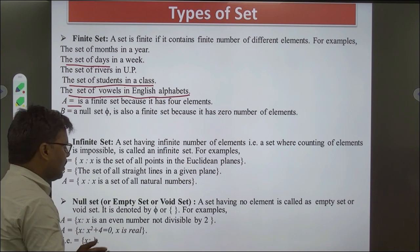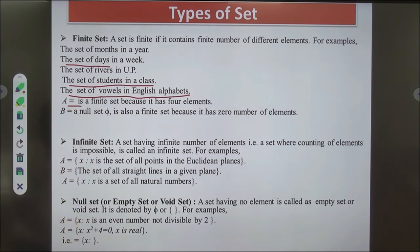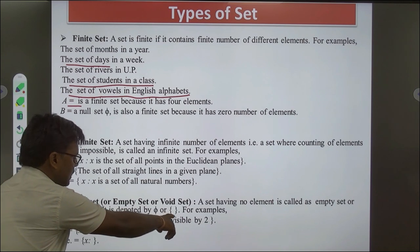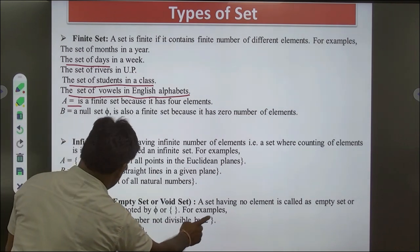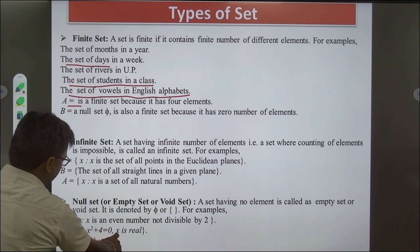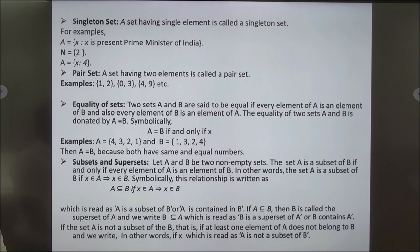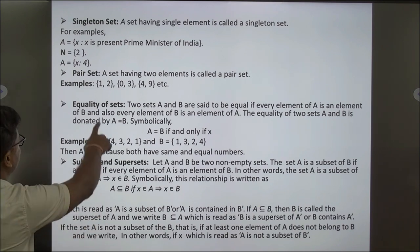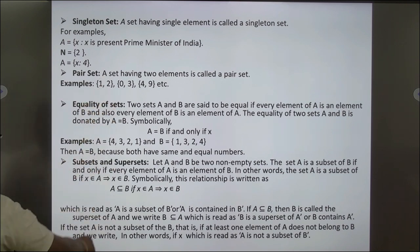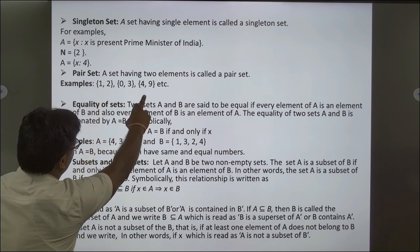Null Set (Empty or Void Set): A set having no elements is called an empty set or void set, denoted by φ or {}. For example, A = {x : x is an even number not divisible by 2}, or A = {x : x² + 4 = 0, x is real}. Singleton Set: A set having a single element is called a singleton set. For example, A = {x : x is the present Prime Minister of India}. Pair Set: A set having two elements is called a pair set. For example, {1, 2}, {0, 3}, {4, 9}.